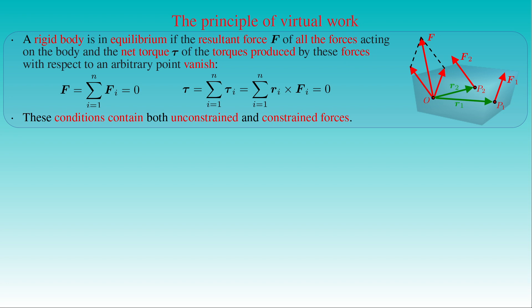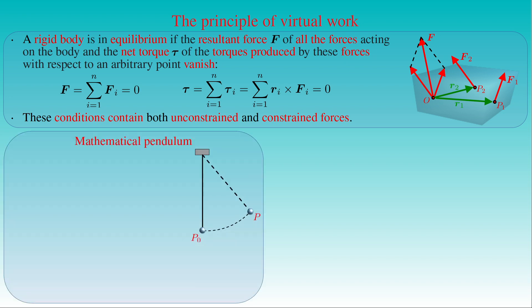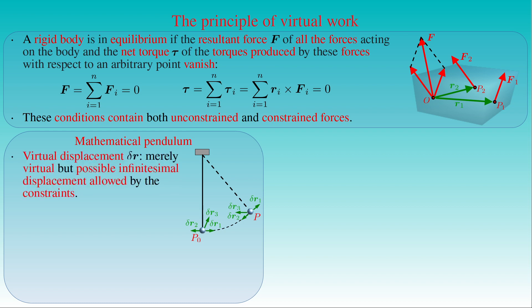Let us first consider one of the simplest mechanical systems: a mathematical pendulum. Suppose we displace it slightly from its instantaneous position P or from its equilibrium position P0, as seen in the figure. Such a merely virtual but possible infinitesimal displacement allowed by the constraints — like the thread of the pendulum — is called a virtual displacement, denoted by delta R. Any virtual displacement can either be perpendicular to the thread, like delta R1 and delta R2, or reduce the stress in the thread to zero, like delta R3.